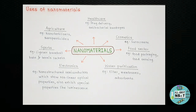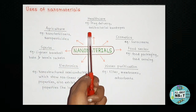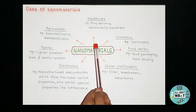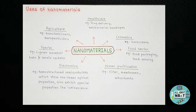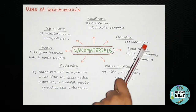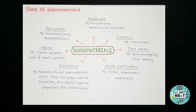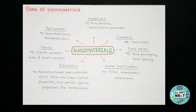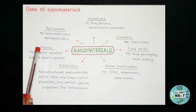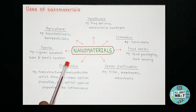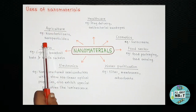Nanomaterials show applications in healthcare, like drug delivery or antibacterial bandages. In cosmetics, TiO2 and ZnO nanoparticles are being used in sunscreens, which are commercially available. In the food sector, nanomaterials are used in food packaging and food sensing. In water purification, nanomaterials are used in making filters, membranes, or absorbents. In electronics, nanostructured semiconductors show non-linear optical properties and luminescence. In sports, nanomaterials are used to make lighter baseball bats or tennis rackets. In agriculture, they are used in synthesis of nanofertilizers and nanopesticides.